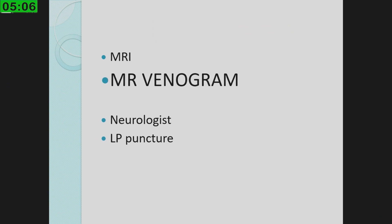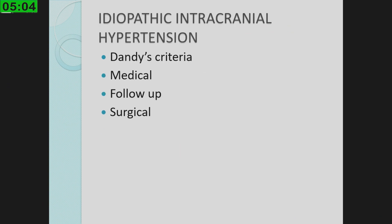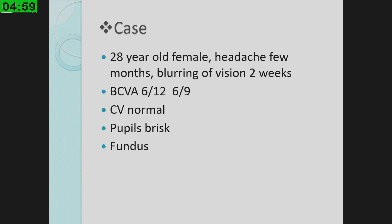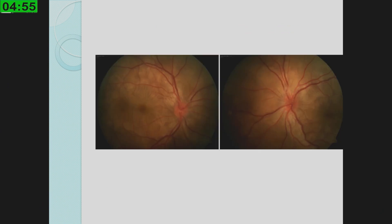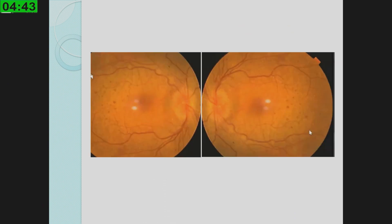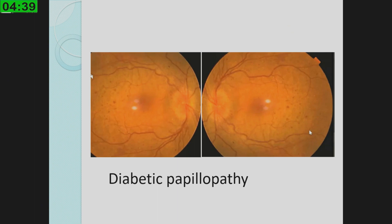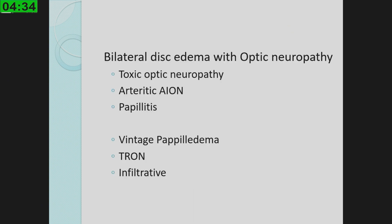Once a patient is diagnosed with IIH, treat medically with acetazolamide. Follow up — if visual fields are dropping, refer for surgical management. In another similar scenario with normal BP, dilated retinal assessment showed multiple exudative retinal detachments — this was a case of VKH. Similarly, if dilated retinal assessment shows diabetic retinopathy changes, this can be diabetic papillopathy. For VKH or diabetic papillopathy, you don't need MRI or MR venogram — simple management of the underlying condition is sufficient.